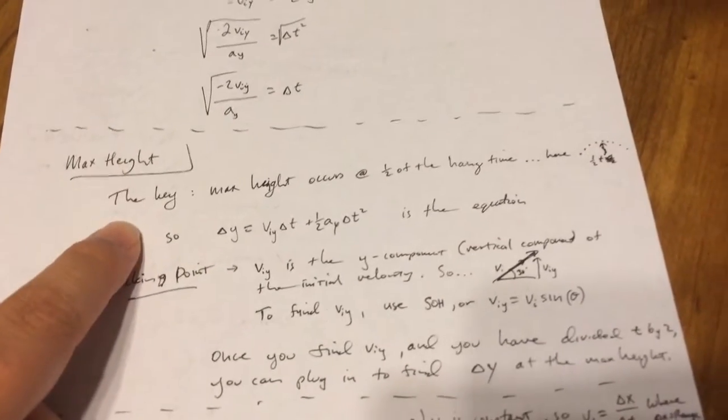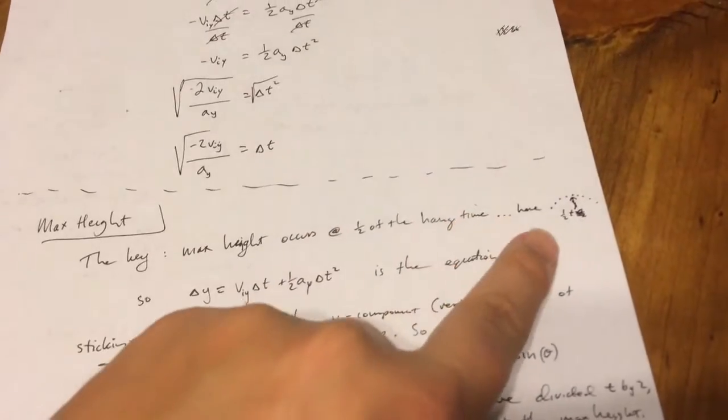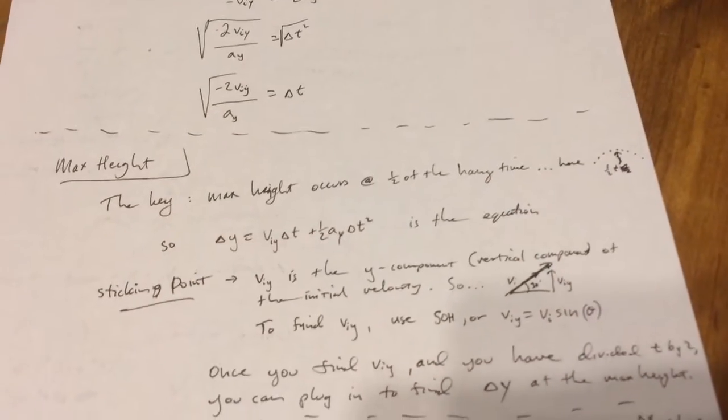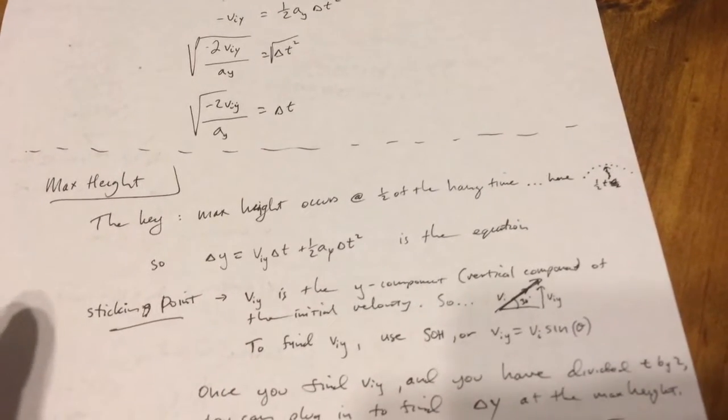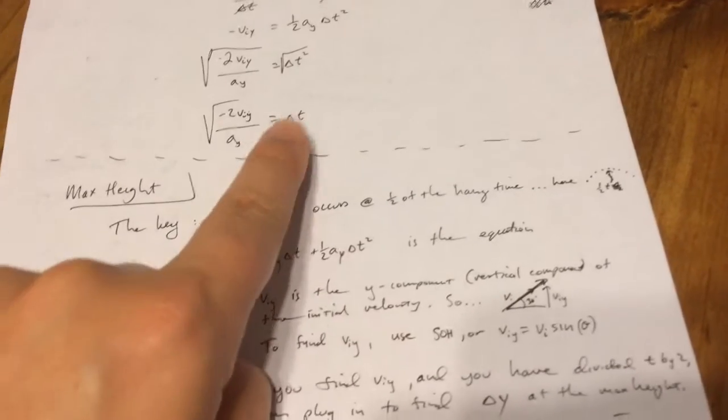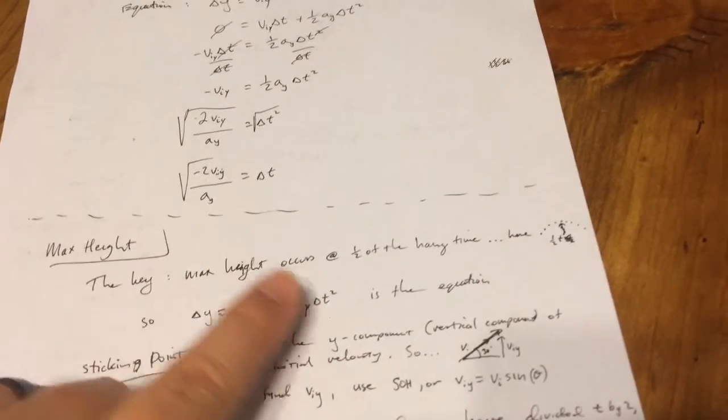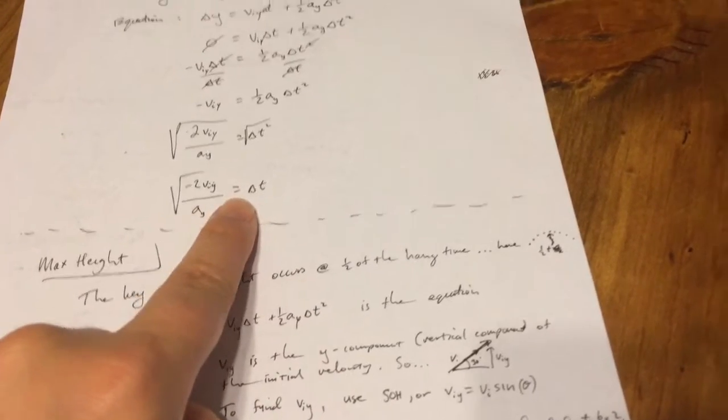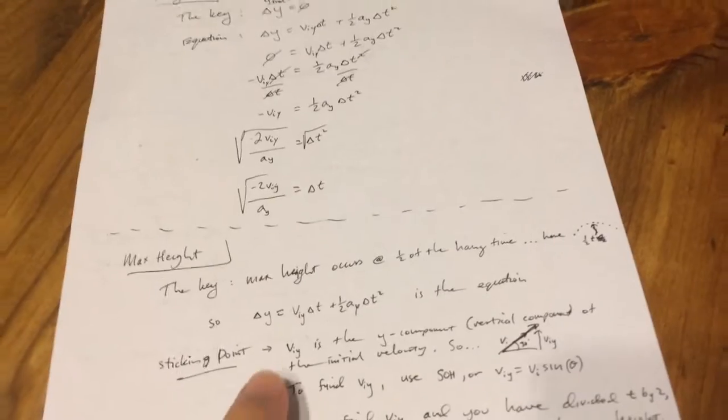You can use this to find the hang time. Moving on, maximum height. So the key here is that maximum height occurs at half of the hang time. We're using the same equation except this time for the time, we're going to take half the time that we came up with here. If this was 2, this would be 1. If this was 4, t would be 2, etc.